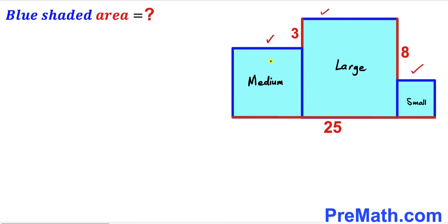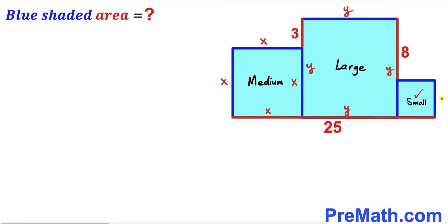Their side lengths are equal. Let's focus on this medium square — I'm going to label its side length as x, so all these side lengths are going to be x as well. Likewise, for this large square I'm going to label its side length as y, so this side length is y across the board. Finally, for this small square I'm going to label its side length as lowercase a, so all sides are lowercase a across the board.